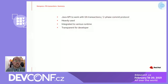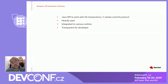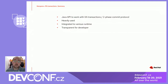In JTA transactions, there's an API based on XA transactions and the two-phase commit protocol to finish the transaction. It's transparent to most developers, and because of that they will use it via well-integrated runtimes.